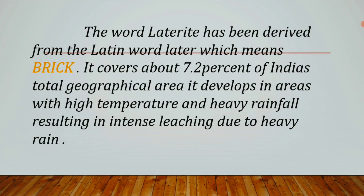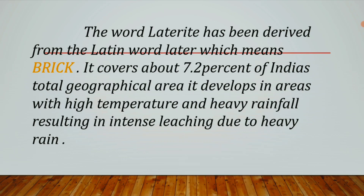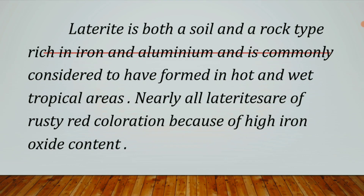Laterite soil is developed in areas with high temperature and heavy rainfall, resulting in intense leaching. It is a rock type rich in iron and aluminum, and is commonly considered to have formed in hot and wet tropical areas.